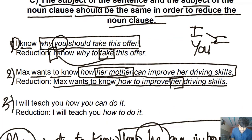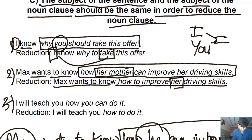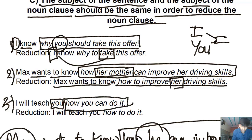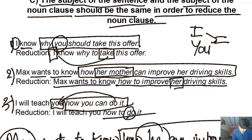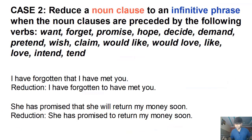When there is an indirect object, the reduced noun clause refers to that indirect object. For example: 'I will teach you how you can do it' → 'I will teach you how to do it.' The action refers to 'you,' the indirect object. So we have now mastered case one — where noun clauses start with conjunctions like when, why, where, how, and what.